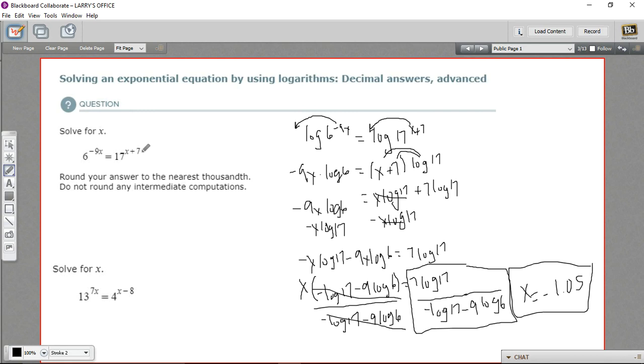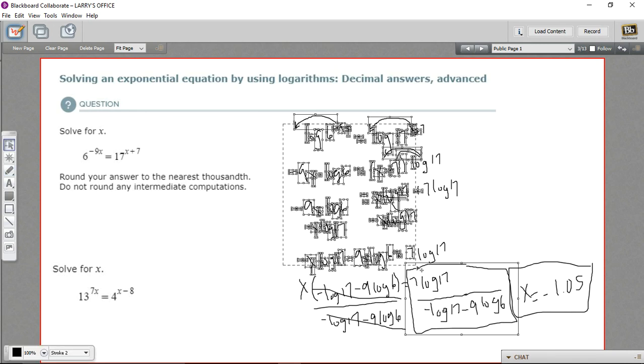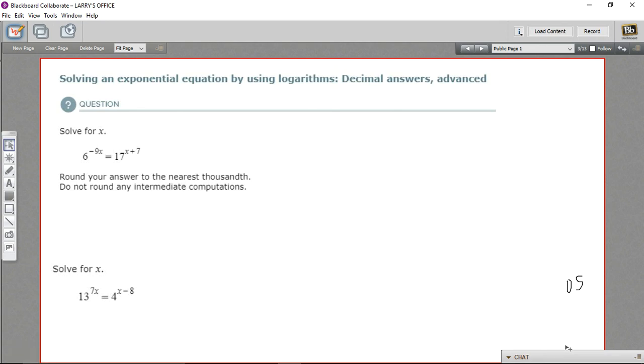So a lot of steps to get there, but we started with something that looked pretty tough, and we got a value for it. So let's try one more, since that was so many steps. Let's practice this again. So this one, we have 13 to the 7x equals 4 to the x minus 8.